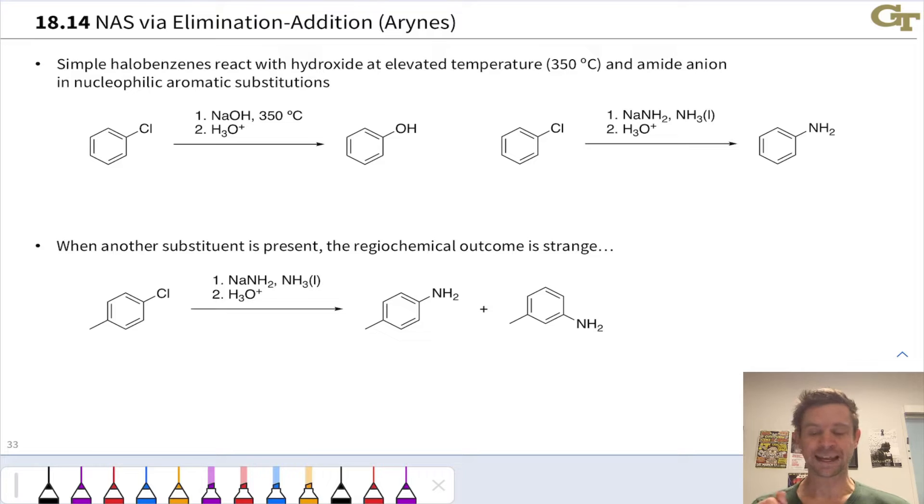In the right-hand reaction, we've again got chlorobenzene, one of the simplest halobenzenes imaginable, reacting with amide anion, sodium amide NH2- in liquid ammonia solution to give aniline after treatment with acid to protonate the N-minus, the negative charge on nitrogen.